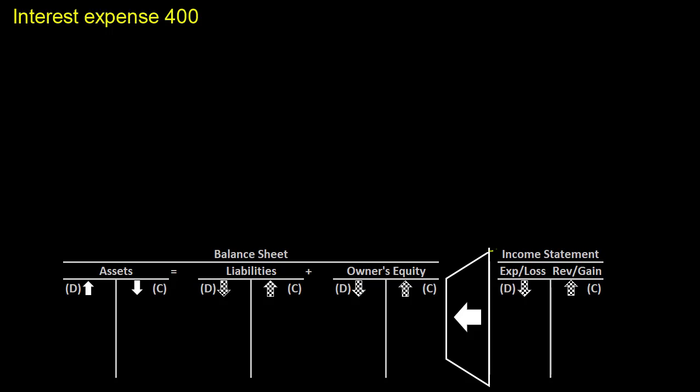This is a journal entry for interest expense, and there are a few ways you can write it. It depends on whether you're paying cash immediately or recording an accrual that we'll mark as a liability to be paid in the future. We'll walk through this and show you what I mean.